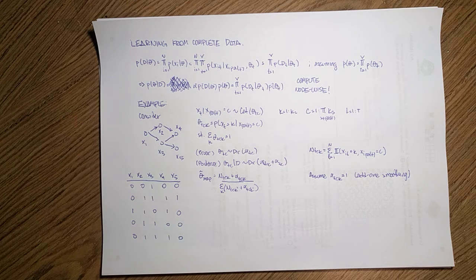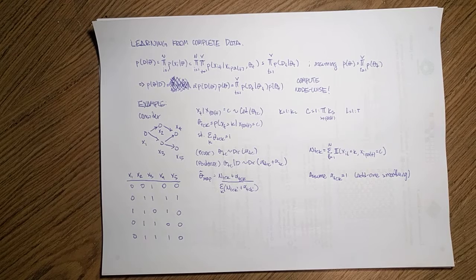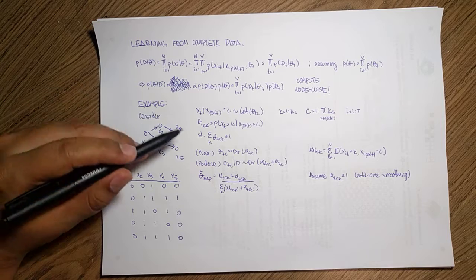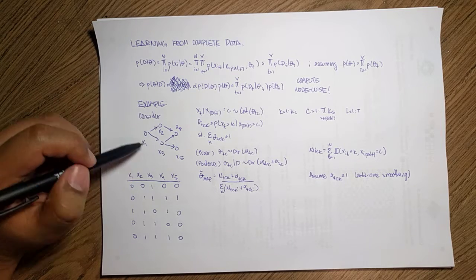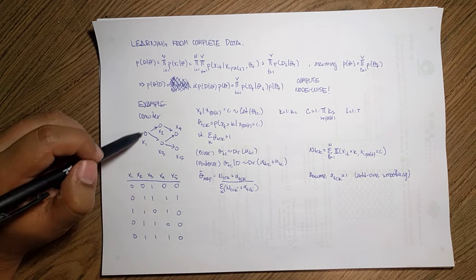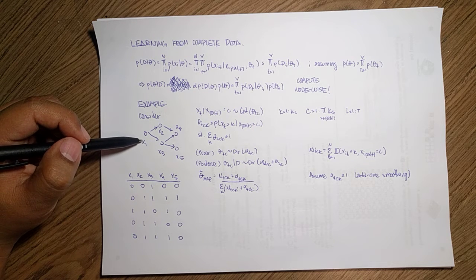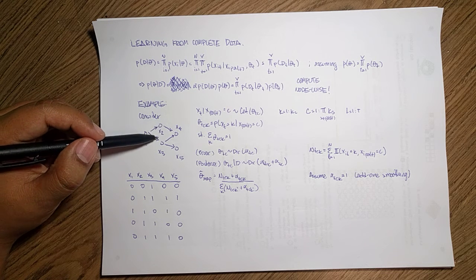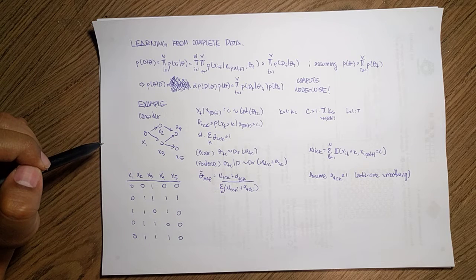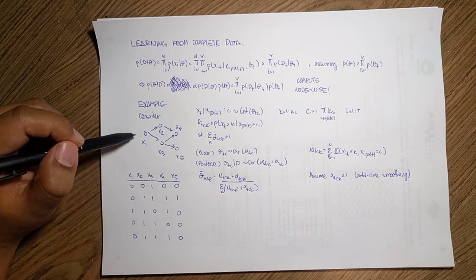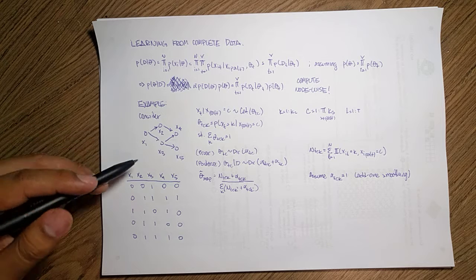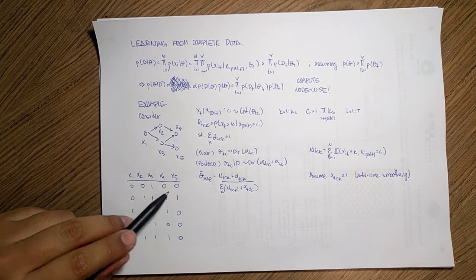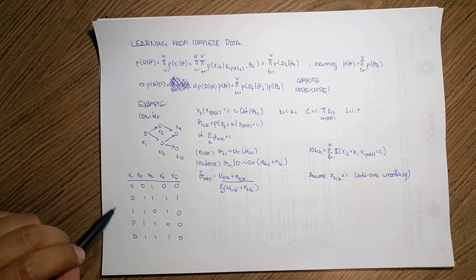If we try to put this into a more concrete example, let's assume the following. So consider this graph. Let's say we have five different variables and these variables are in these dependent dependency. So let's say x1 is the parent and x2 and x3 depend on x1, x4 depends on 2 and 3 and 5 only depends on x3. And we collected some data from these variables. So we have these five rows of data and we observe if the variable was on or off in each particular case.